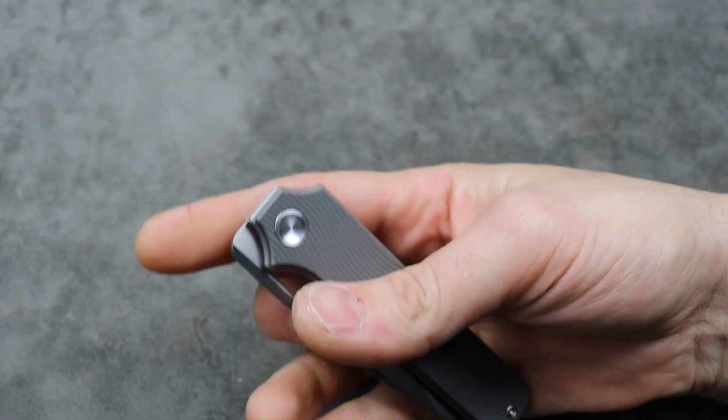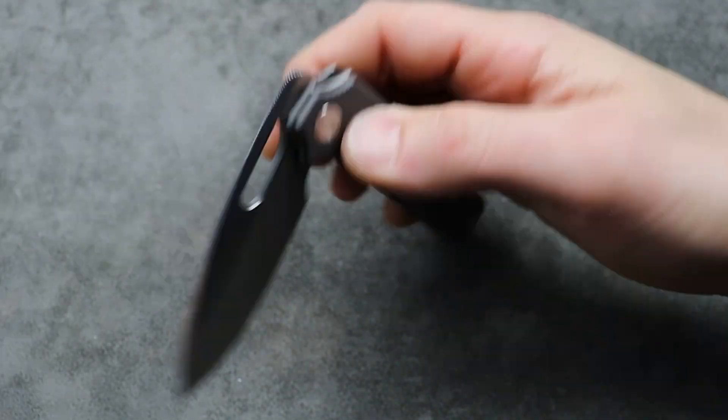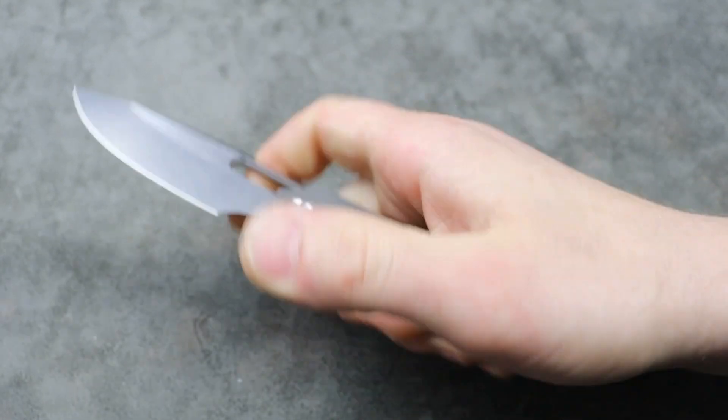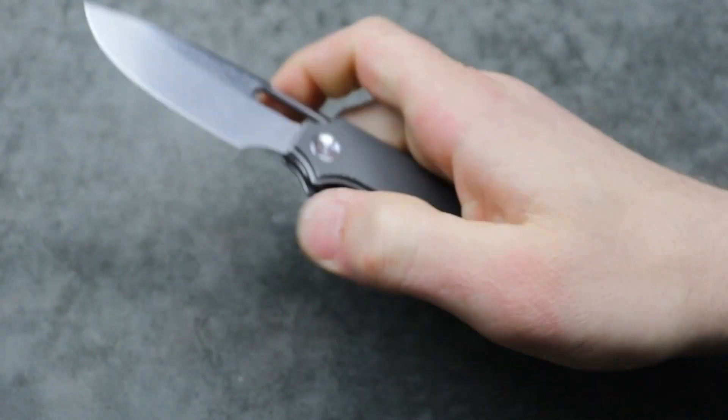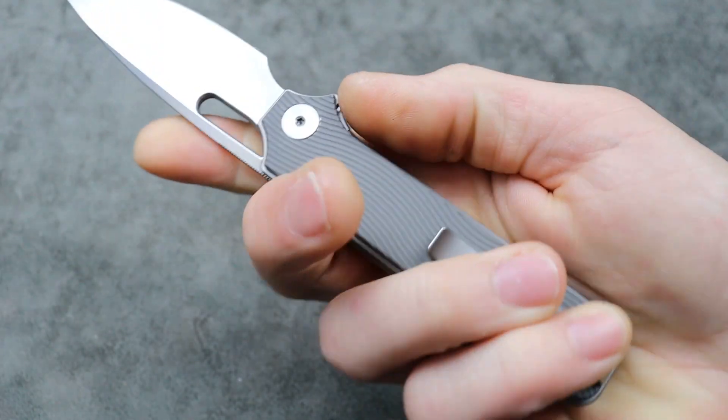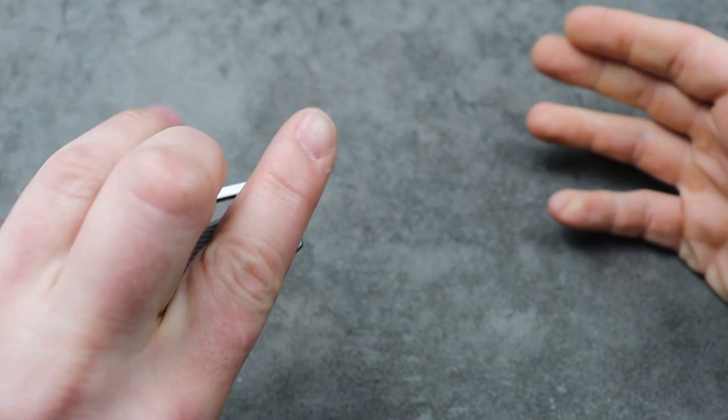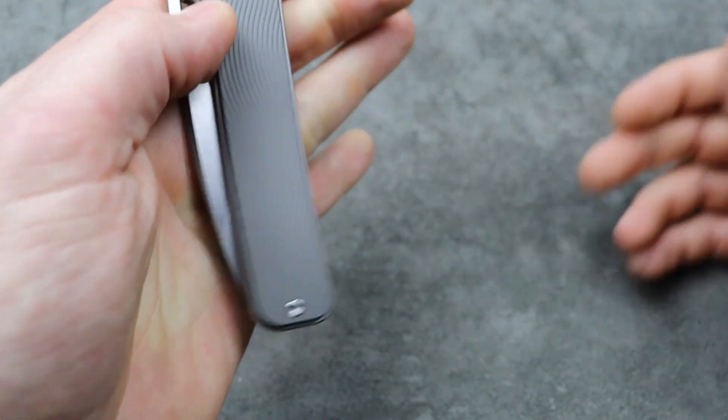Let's talk about the action. You have the hole deployment that works great. You can thumb flick it or thumb roll. You can easily thumb roll it because it's not a frame lock. So you don't have to worry about locking yourself out. And again, it's going to be great for lefties as well.